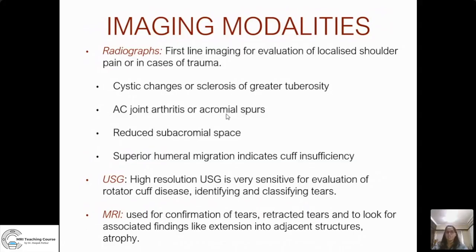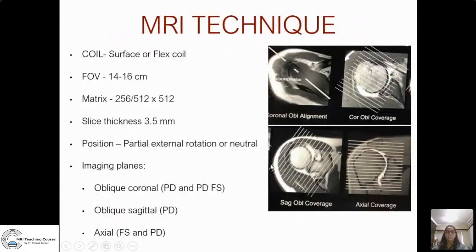When it comes to imaging of the shoulder, radiographs are always the first-line imaging used for evaluating localized shoulder pain or in cases of trauma. Radiographic features that may indicate underlying cuff disease include cystic changes, irregularity or sclerosis of the greater tuberosity, acromioclavicular arthritis or acromial spurs with reduction of subacromial space — which may indicate impingement — and superior humeral migration, which indicates cuff insufficiency. This is an important finding because if missed, a rotator cuff abnormality might be overlooked. High-resolution sonography is a very sensitive method for evaluating the cuff and can pick up the entire spectrum of cuff disease.